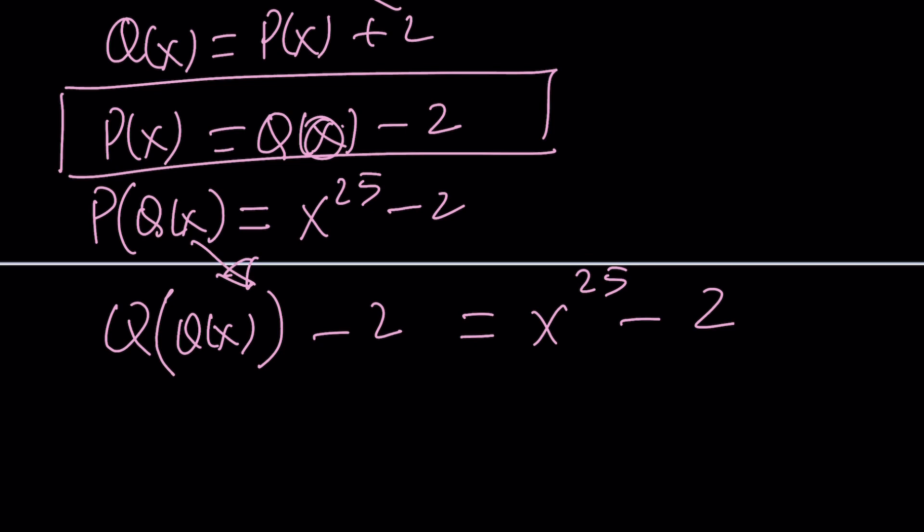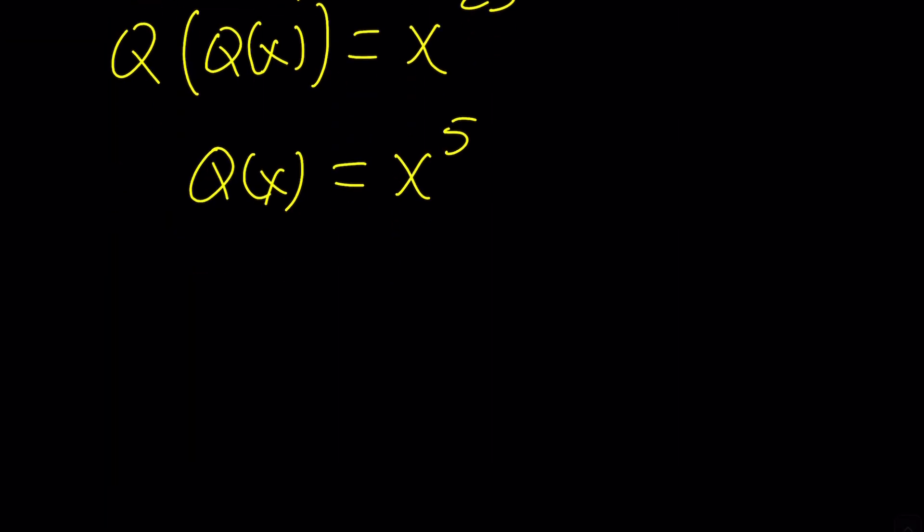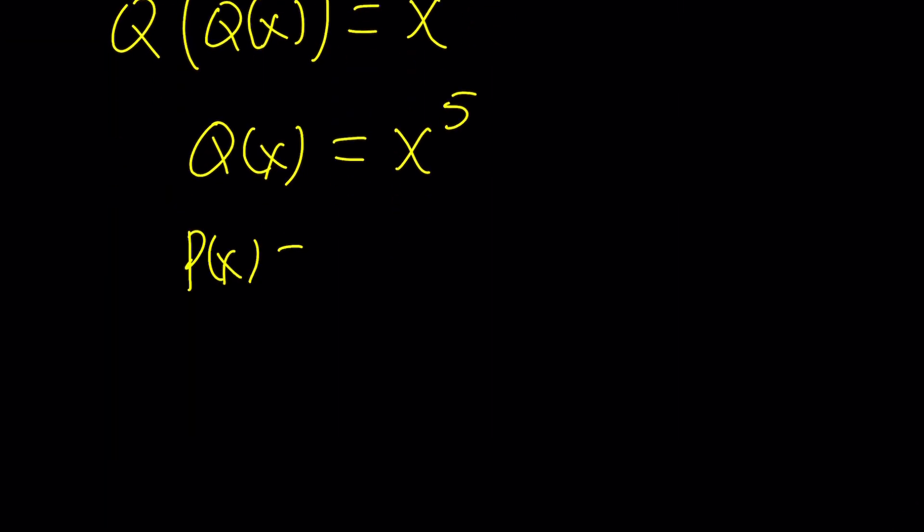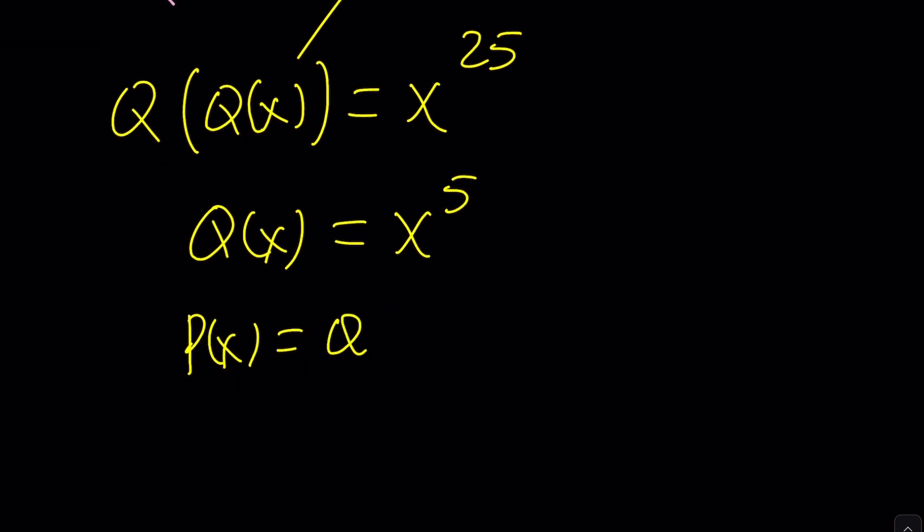The negative 2 cancels out. Don't you love that? We're going to get Q of Q of X equals X to the power 25 and guess what? Because P of X is a polynomial, so is Q of X and Q of X can only be X to the power 5. Because that's the only polynomial that satisfies this equation. Therefore, P of X from here is going to equal Q of X minus 2, which is X to the 5th minus 2, which is the solution.